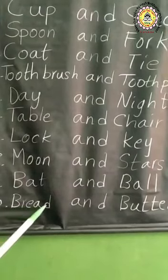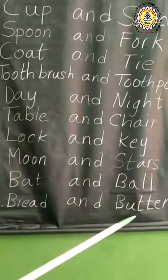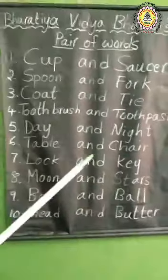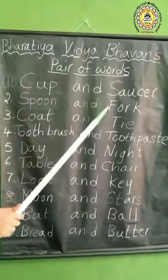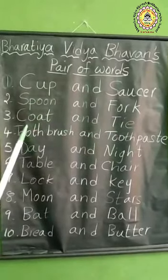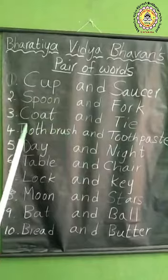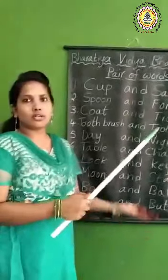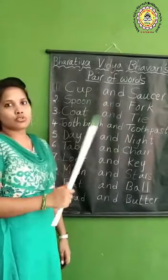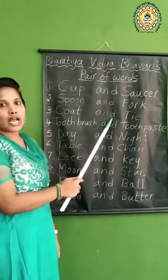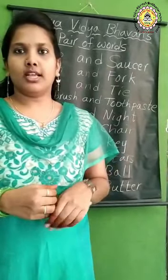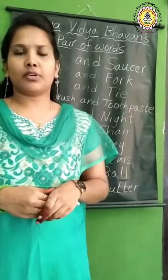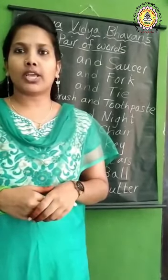Repeat after me, children: B-R-E-A-D — bread. Bread and butter. B-U-T-T-E-R — butter. We use these words in our daily life. We use these words in a particular order only, in the same order — not as saucer and cup, fork and spoon, night and day. We don't use these words in reverse order. What is the word we use to join these two words? A-N-D — 'and.' We use 'and' to join these two words. Such type of words are called pair of words. You can find many words in your daily routine, like shoes and socks, in and out, needle and thread, now and then — so many words you can find in your daily life.